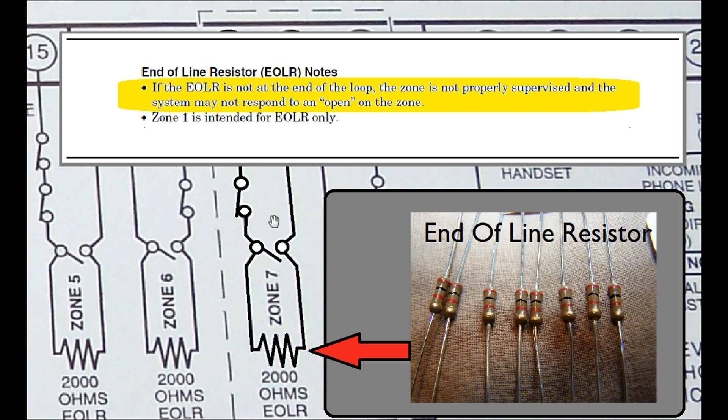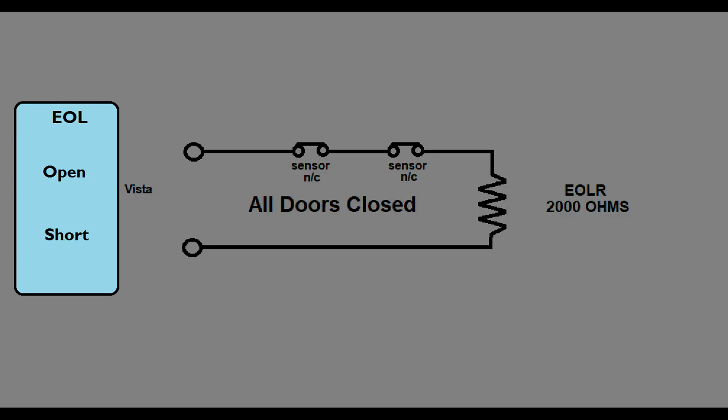Here I have a zone using normally closed sensors. The Vista is looking for one of three inputs. If it sees the end of line resistor, that means the zone is secure and the panel is ready for arm. If it sees an open, that means the zone is faulted. If the panel is disarmed, you cannot arm it, or if it was armed, it will set off the alarm. And finally, a short means the zone has a wiring error. This will activate the trouble alarm.